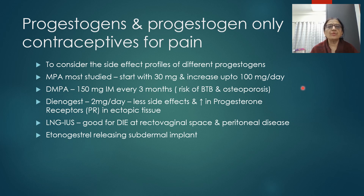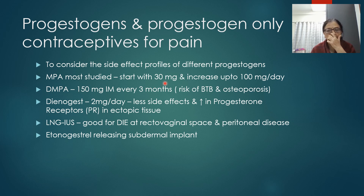The second drug class is progestogens and progestogen-only contraceptives for pain. Side effect profiles must be considered for each. Medroxyprogesterone acetate (MPA) is the most studied; starting dose is 30 mg — higher than for AUB — because ectopic endometrium has progesterone resistance due to fewer progesterone receptors. The dose can be increased up to 100 mg per day depending on patient need.